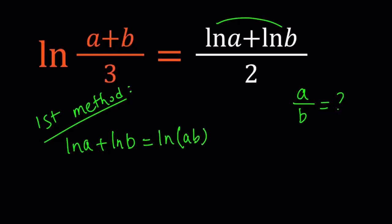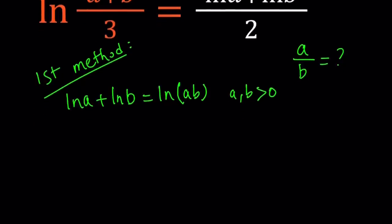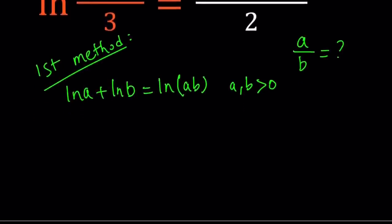Of course, in this case, we have to have a and b be positive, because a log function is only defined if the arguments are positive. So this gives us the following: the left-hand side stays the same for now, ln((a+b)/3). And for the right-hand side, I can write ln(ab) for the numerator and 2 at the bottom.